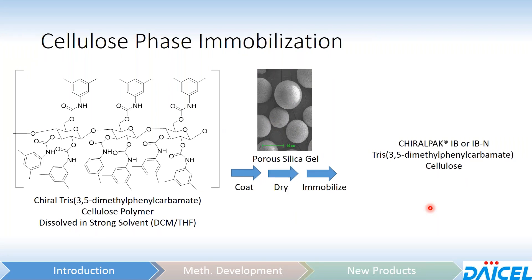If you implement an immobilization process at the end, you now have the immobilized version — ChiroPak IB or ChiroPak IBN. And because these polymers are soluble in strong organic solvents like dichloromethane and THF, this is why the coated phases are restricted from utilizing these solvents. In the case of the immobilized columns, however, you can certainly use them without any issues.